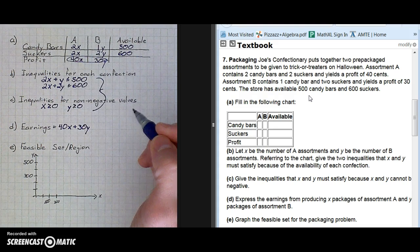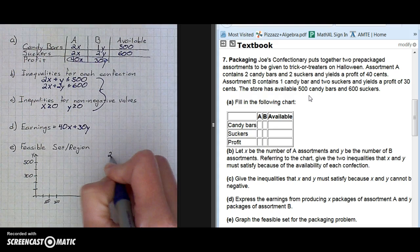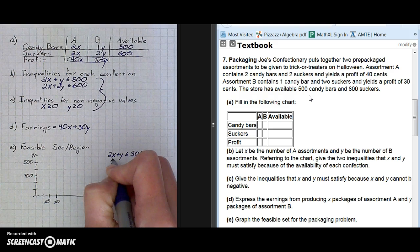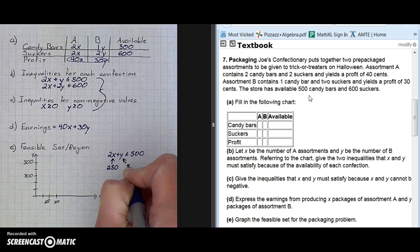The very first inequality was 2X plus Y is less than or equal to 500. The X intercept is 250. The Y intercept is 500.